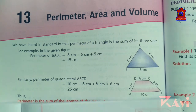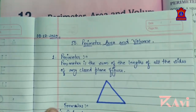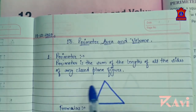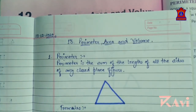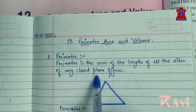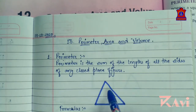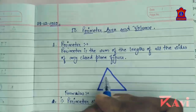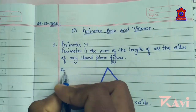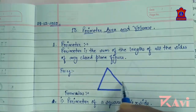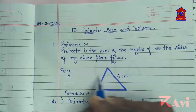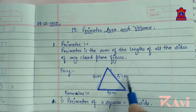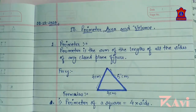Look here — I have prepared something for you. These are some basics of this chapter. First of all, what is perimeter? Perimeter is the sum of the length of all the sides of any closed plane figure. This is a closed plane figure. For example, if this is 5 cm, this is 4 cm and this is 4 cm — when you add all the three lengths, you will get the perimeter. Perimeter is the boundary of any figure.